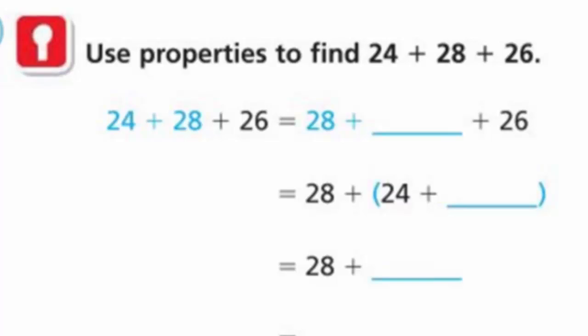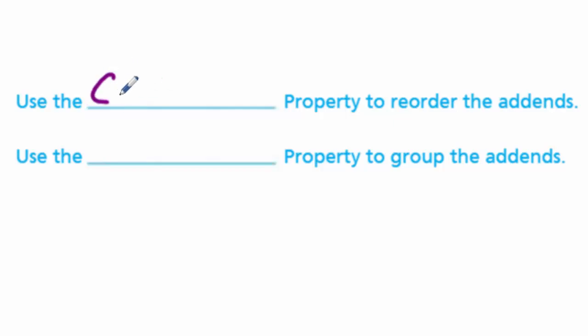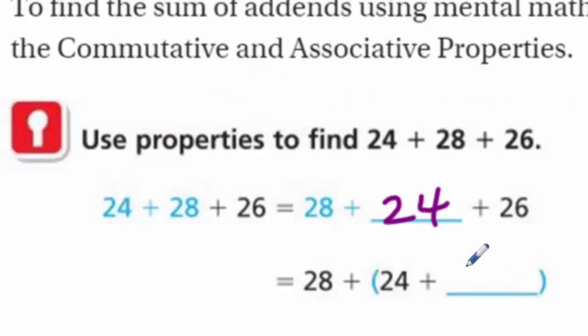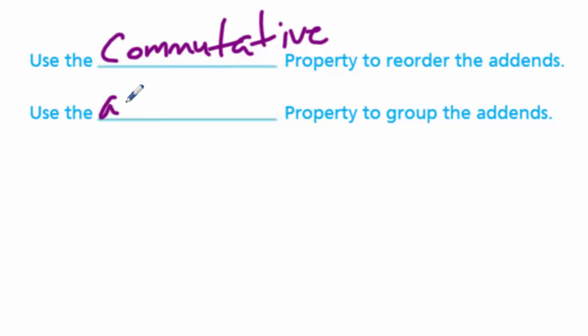Wow, those are the number of bones there. Amazing. Now it does say use properties to find 24 plus 28 plus 26. In the example they give us there, you see the 24 and the 28, they're highlighted. And then the 26 is black, so then they have 28. So what do they do? It looks like they're switching this around a little bit. I wonder why they would do that. There must be a reason. Ah, maybe because of compatible numbers. So let's go ahead and I'm thinking where you'd be using the commutative property. So therefore I'm going to be putting the 24 there.